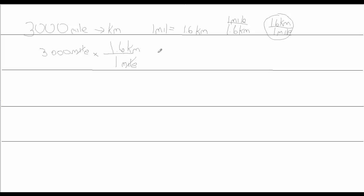Math on the units is done — miles cancel out — and now I do math on the numbers. 1.6 times 3,000 is 4,800. Make sure that's a comma, not a decimal point: 4,800 kilometers. Writing this in scientific notation, it will be 4.8 times 10 to the third, because I shifted the decimal place three places to get to 4.8.